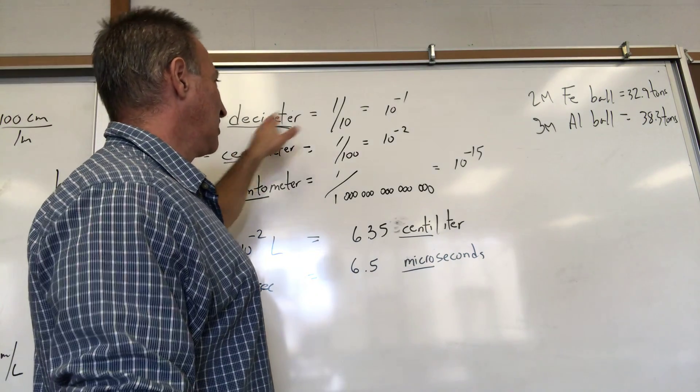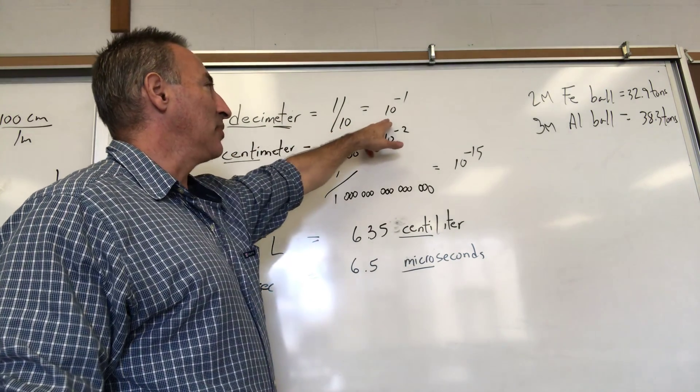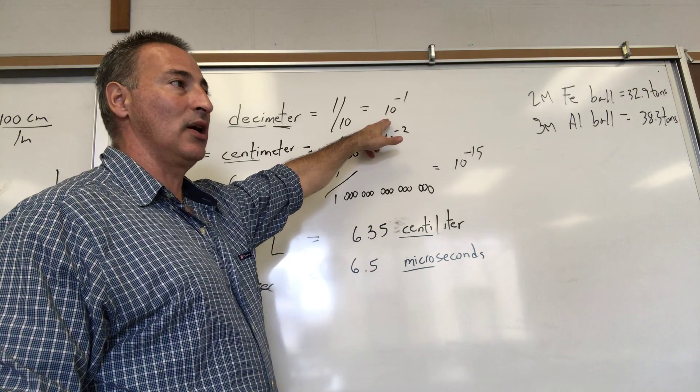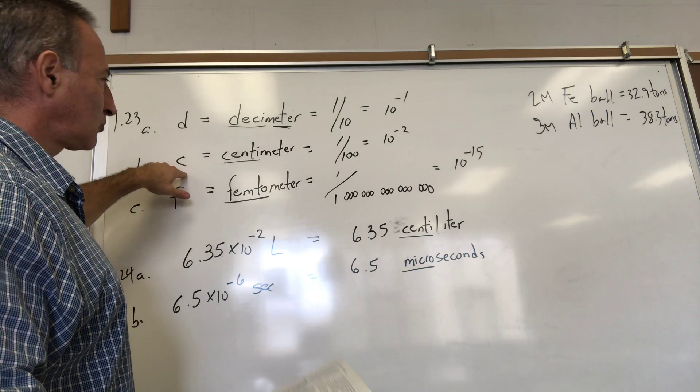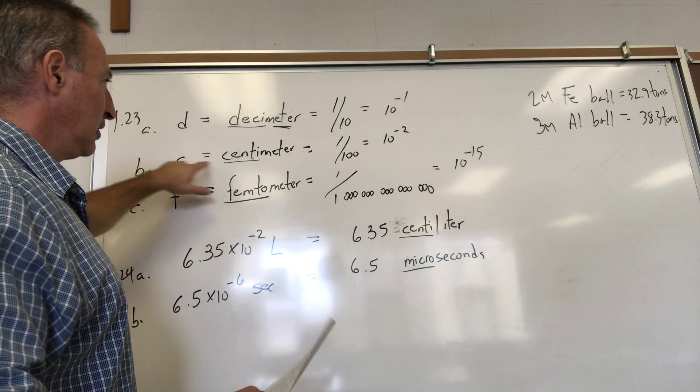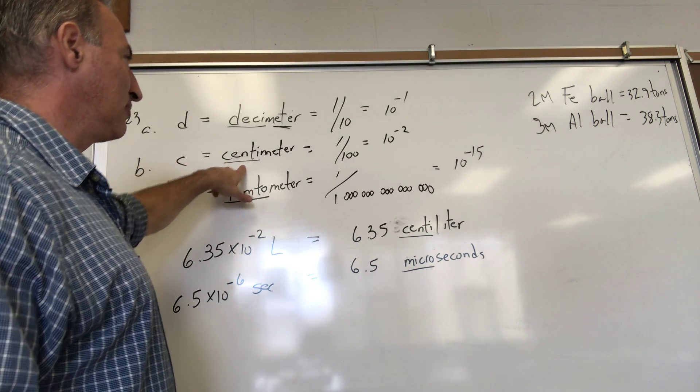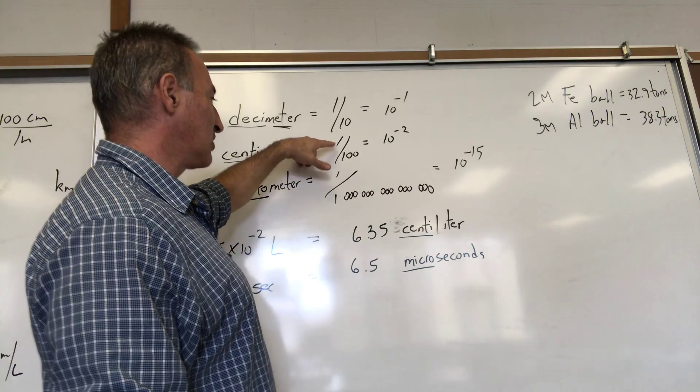One tenth can also be written as 10 to the minus one. If you have centimeter, lowercase c, centimeter means one one-hundredth of whatever unit you happen to be modifying. So 1/100 equals 10 to the minus two.